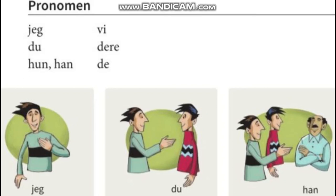Pronomen — pronoun. So here, as you guys can see, jeg means I, vi means we — same as English. Du means you. And if 'do' is written as 'do' that means toilet, so that's a confusing word. Du means you.